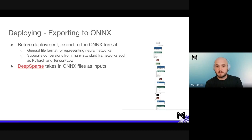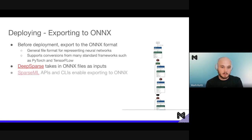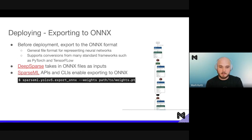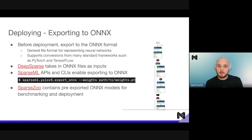SparseML APIs and CLIs enable exporting to ONNX. After installing SparseML, you can use SparseML.yolov5.export_onnx with your trained weights — for example, the weights we just trained on COCO 128 — using this command in your terminal to immediately deploy it. The SparseZoo, where we keep all our models and recipes, also contains pre-exported ONNX models for benchmarking and deployment, which you can reference using what we call ZooStubs.